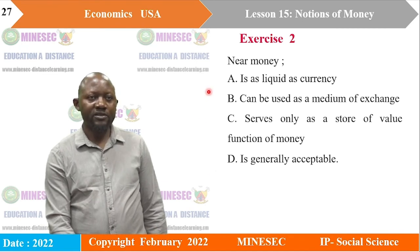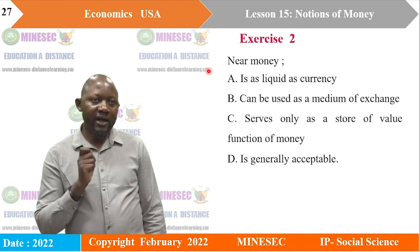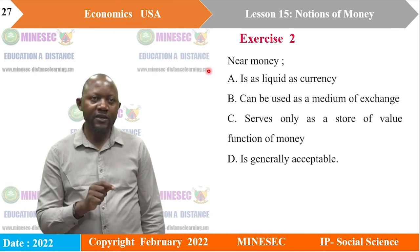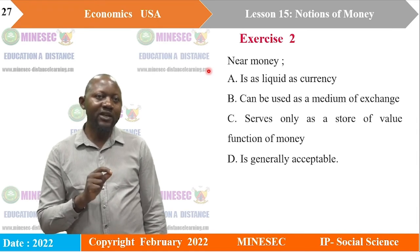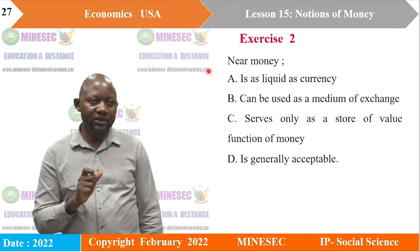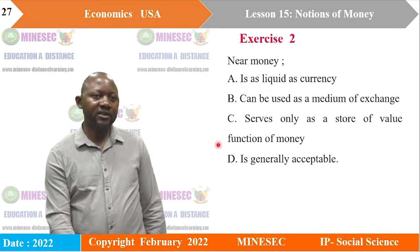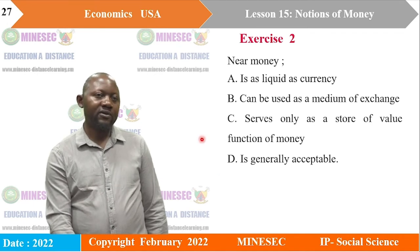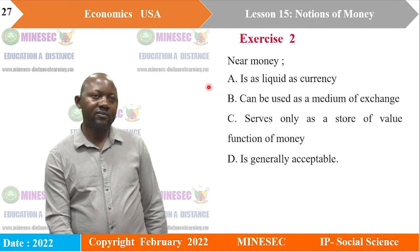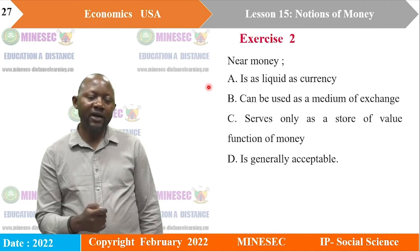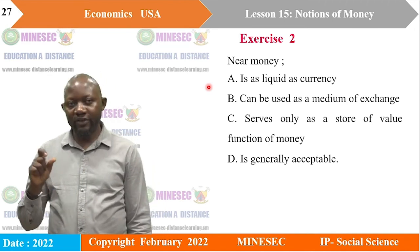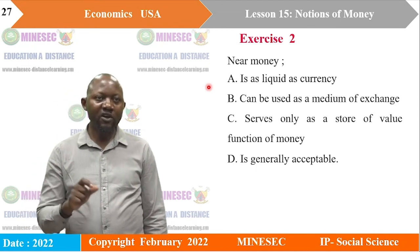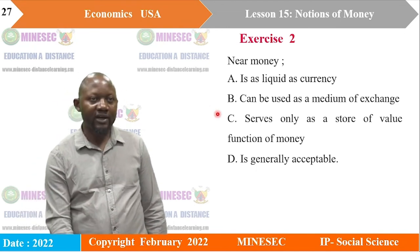Near money: A) is as liquid as currency, B) can be used as a medium of exchange, C) serves only as a store of value, or D) is generally acceptable. Near money was defined as earning assets that serve as a store of value and not as a medium of exchange — with examples like government bonds and treasury bills. So the correct answer is C: serves only as a store of value.